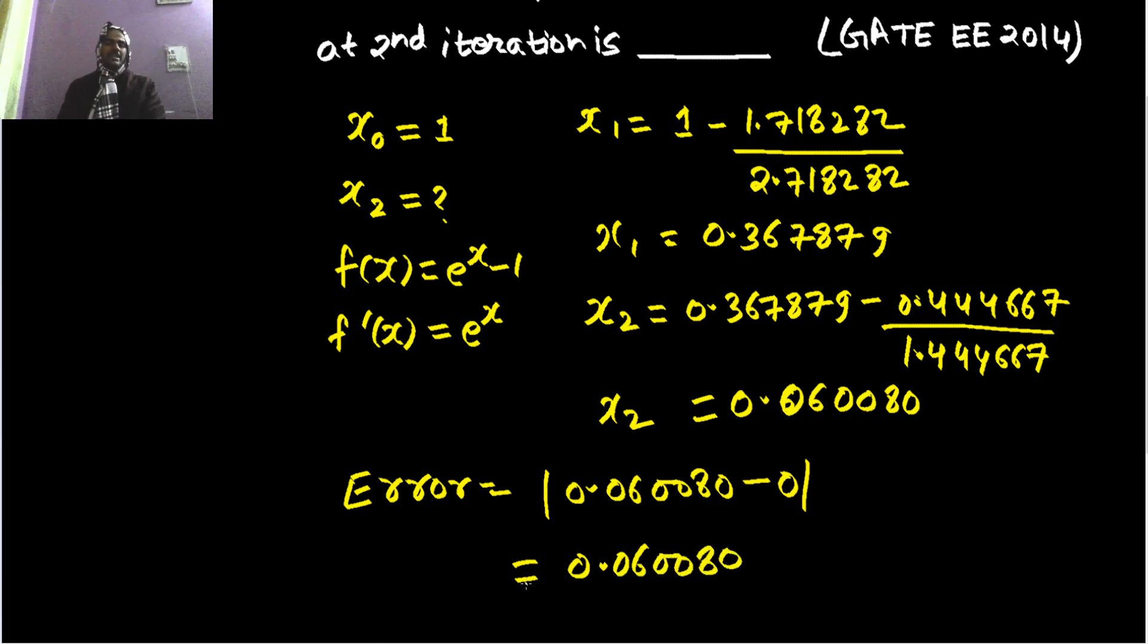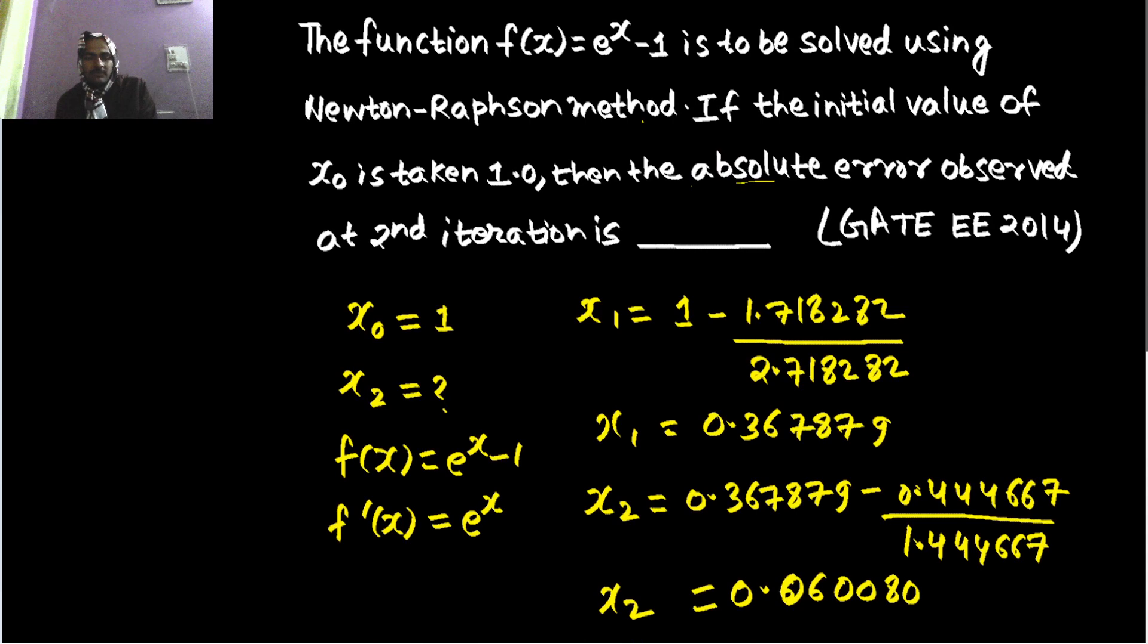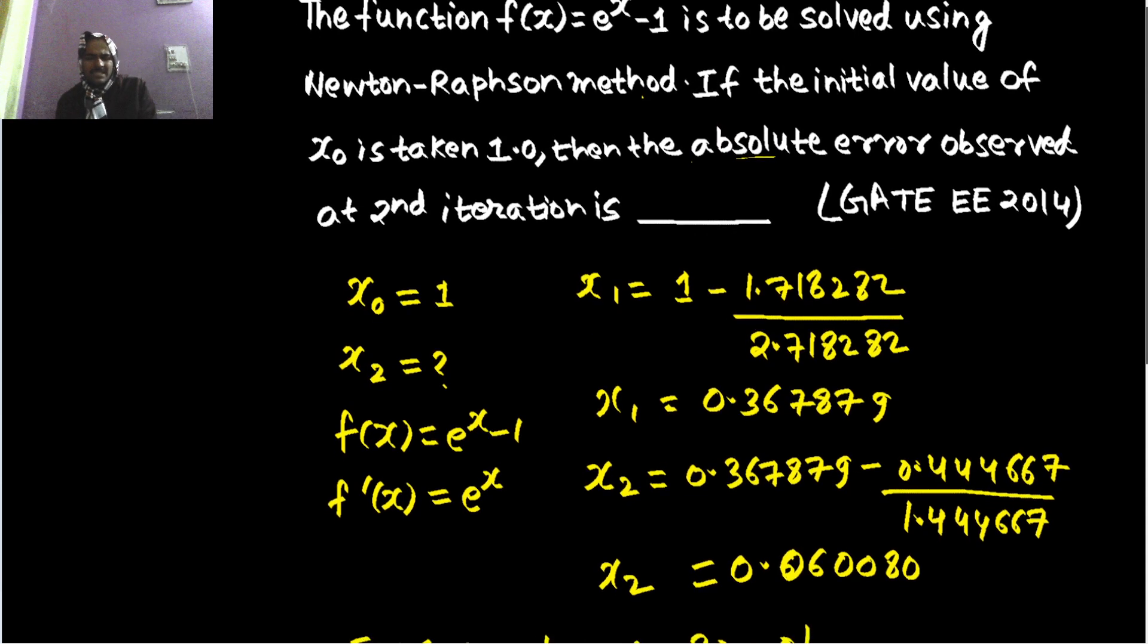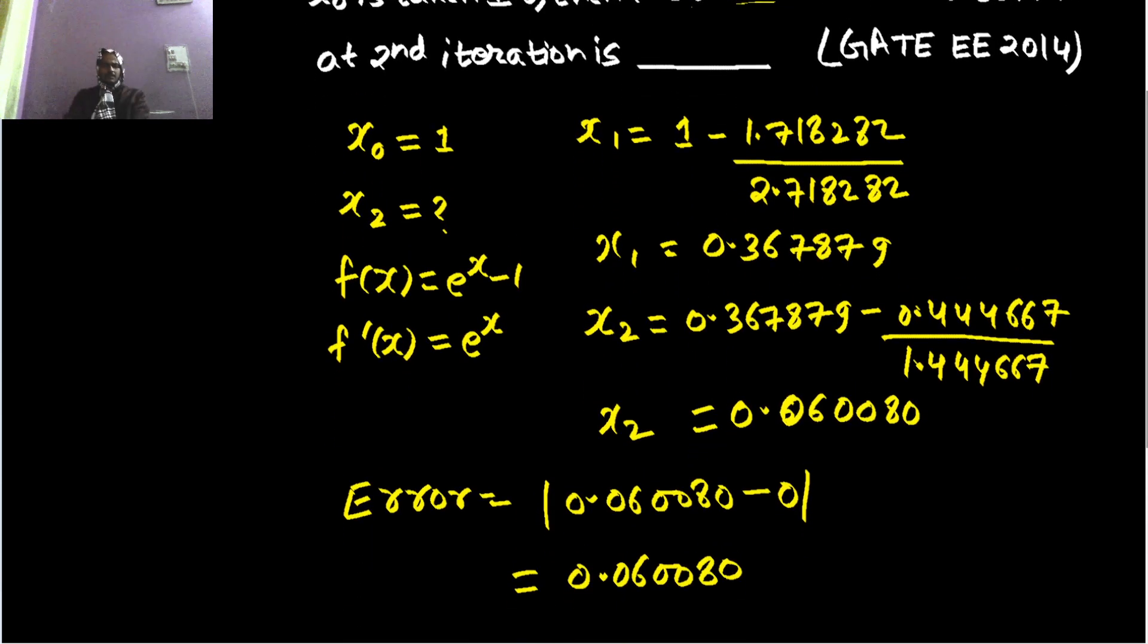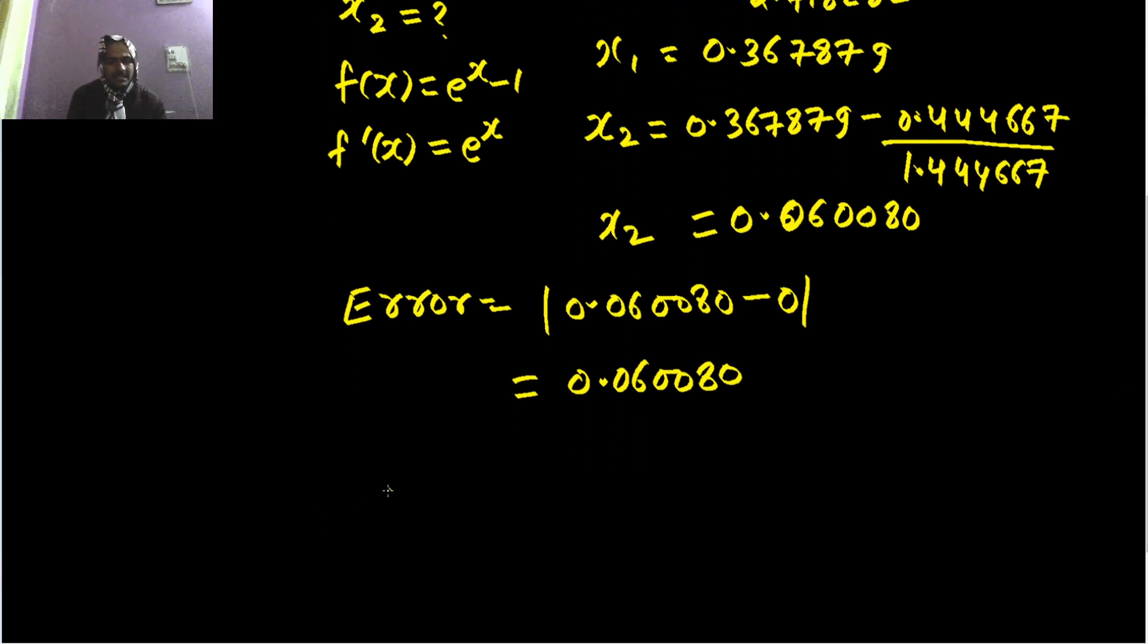So if they want up to 2 decimal places, depending on whatever they want, you will get 0.06. Depending upon what they wanted, number of decimal places they have not mentioned, but this is what we have. The iterative formula, let us recap this.